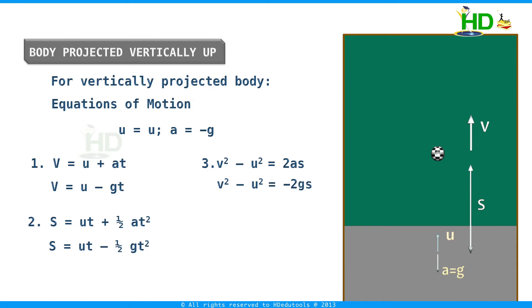The displacement covered in the nth second is given by S_n equal to u plus a times (n minus 1/2), which for a vertically projected body takes the form S_n equal to u minus g times (n minus 1/2). These are the equations of motion for a body projected vertically up from the ground.